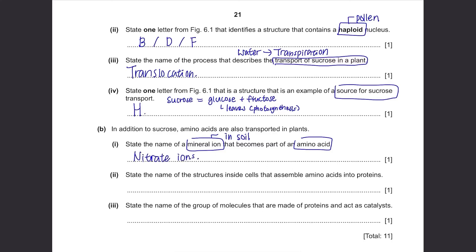State the name of the structures inside cells that assemble amino acids into proteins. What makes amino acids into proteins? You can write ribosomes or rough endoplasmic reticulum. Both assemble amino acids into proteins.